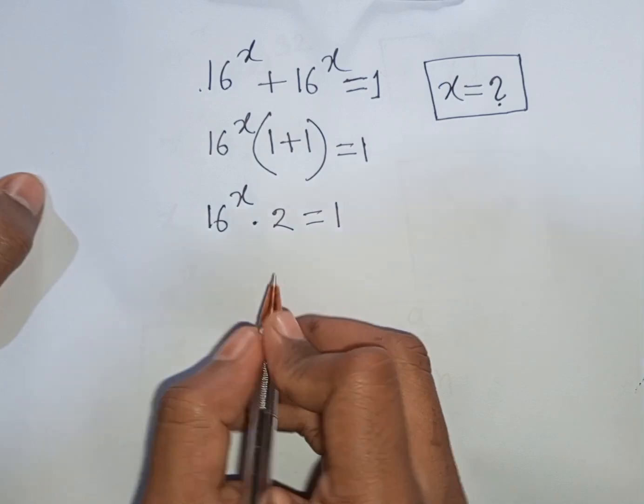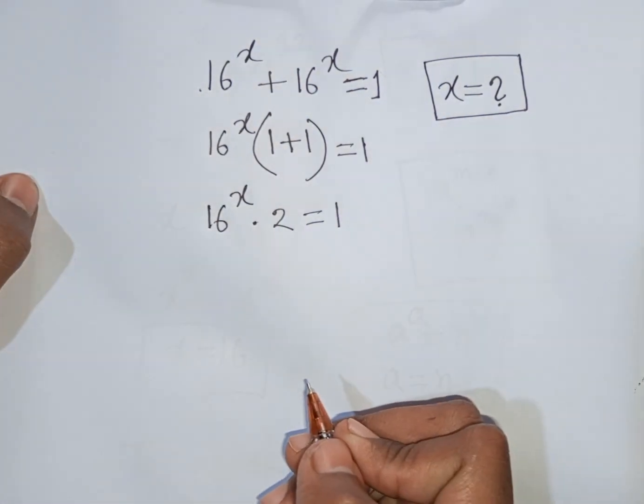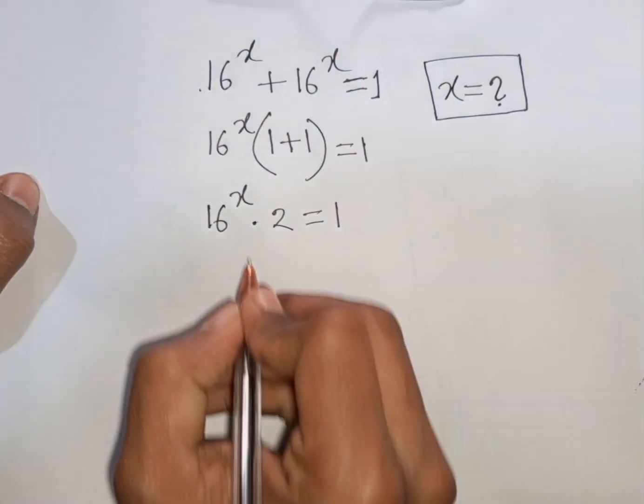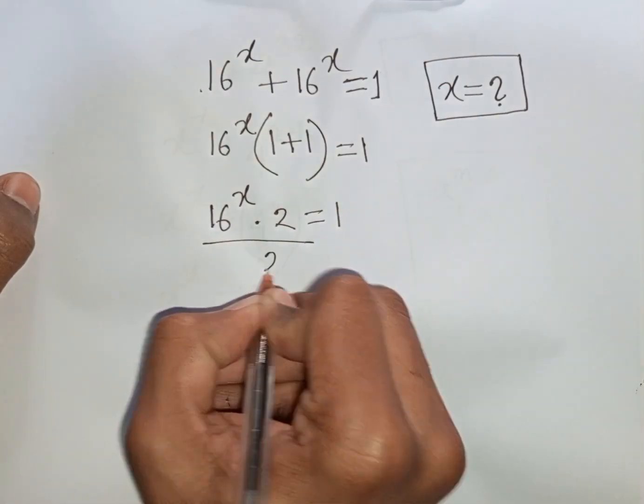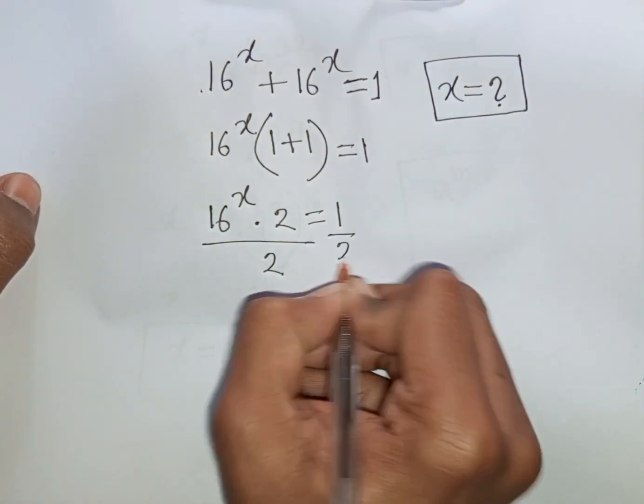Now we divide by 2 on both sides. So divided by 2, divided by 2.